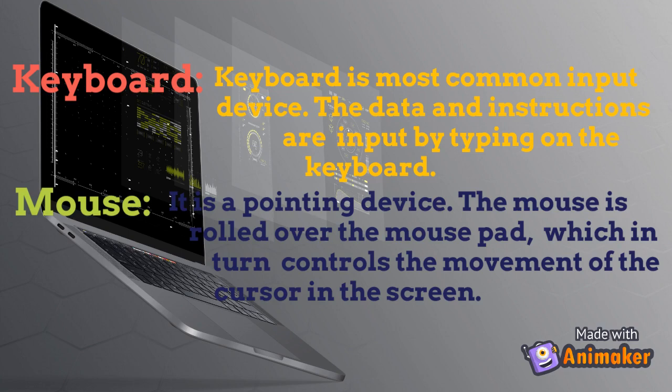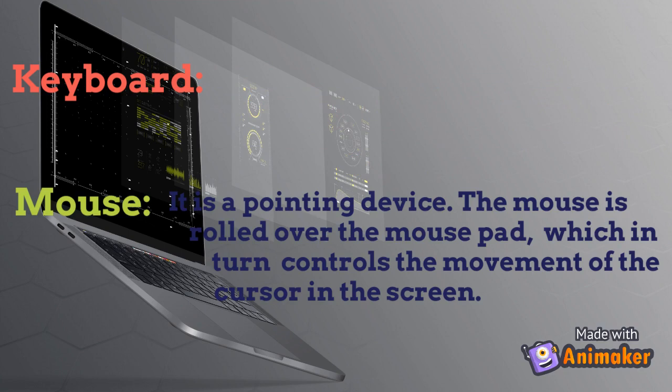Now let's see some examples of input devices. Keyboard: the keyboard is the most common input device. Data and instructions are input by typing on the keyboard — we type and it is stored inside the computer and displayed on screen. Mouse: the mouse is also called a pointing device. You know the arrow sign — that is the cursor. The mouse is rolled over the mouse pad, which in turn controls the movement of the cursor on the screen.